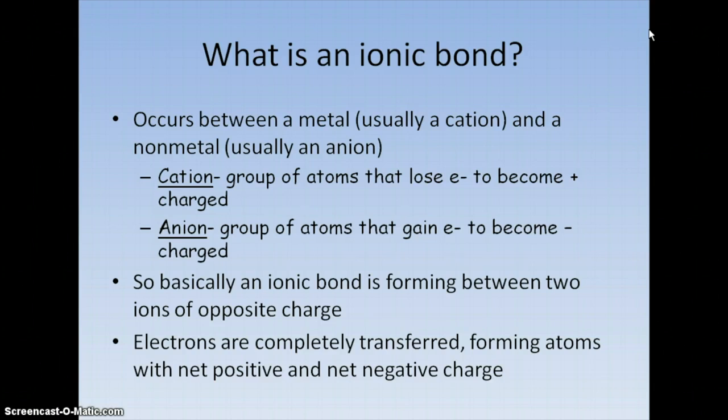Metals tend to lose electrons to become cations. That means they have a positive charge. Non-metals tend to gain electrons to become negatively charged. That makes them an anion.